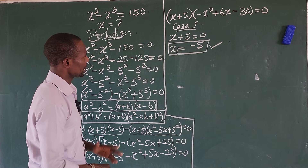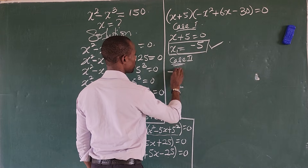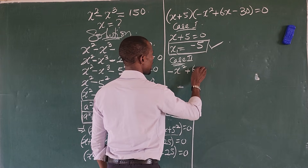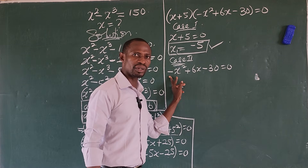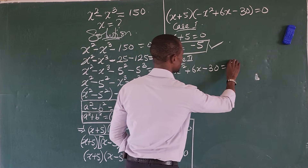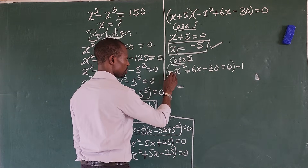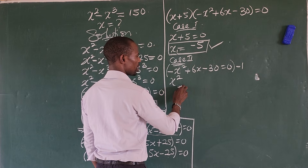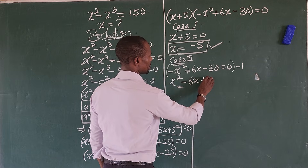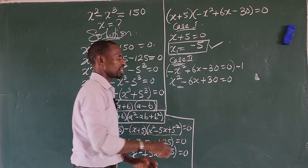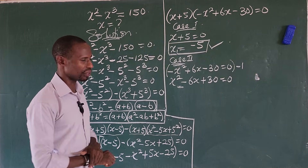Then let's go to Case 2. We have the term minus x to the power of 2 plus 6x minus 30 equals zero. Because of the leading minus, we eliminate it by multiplying the whole equation by minus one. So this gives us x to the power of 2 minus 6x plus 30 equals zero. This is a quadratic equation, and we just have to solve it.